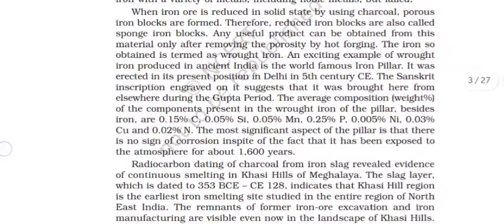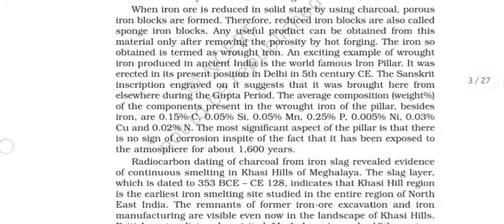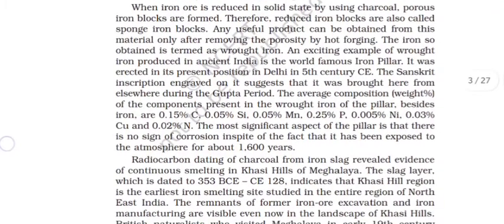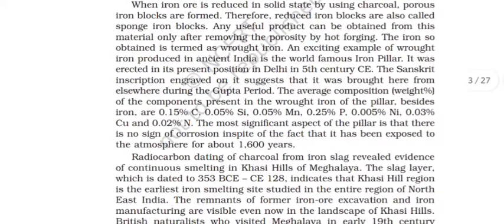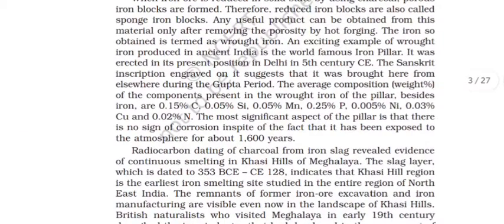When iron is reduced in solid state by using charcoal, porous iron blocks are formed. Therefore, reduced iron blocks are also called sponge iron blocks. Any useful product can be obtained from this material only after removing the porosity by hot forging. The iron so obtained is termed as wrought iron. An exciting example of wrought iron produced in ancient time is the world famous iron pillar. It was erected in its present position in Delhi in 5th century CE.